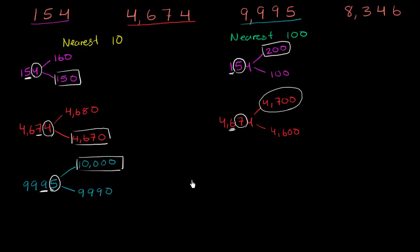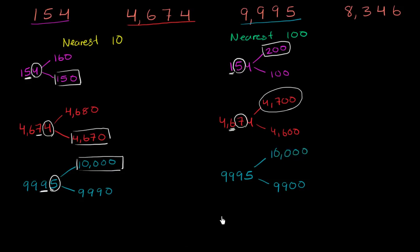Now let's round 9,995 to the nearest hundreds. The multiple of 100 below this is 9,900, and the next multiple of 100 above this is 10,000 — adding 100 to 9,900 gets you there. To decide whether to round up or down, we're not looking at the ones place anymore. We look one place to the right of the hundreds place, which is the tens place. If it's 5 or greater, we round up; if less than 5, we round down. It is 5 or greater, so we round up to 10,000.